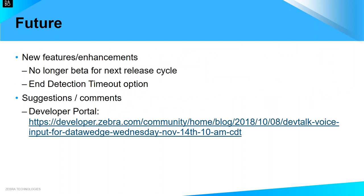Looking ahead, the feature will be released as an official version in the next release cycle. A new feature anticipated in DataWedge version 7.1 is the end detection timeout, which sets the timeout value in seconds for data capture to remain in the waiting-for-data state — another way to terminate data capture rather than using an end phrase. For releases beyond that, new features are being explored and feedback is welcome, which can be posted on the developer portal where the recording will also be posted.